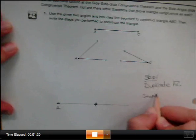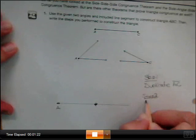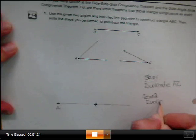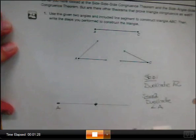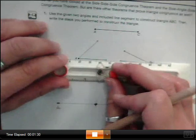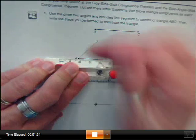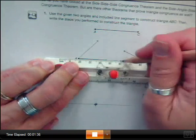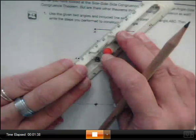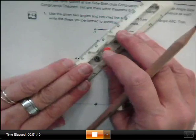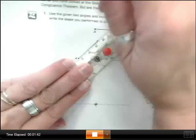Step two is to duplicate angle A. Now you may need to extend those lines a little bit so that you have a little bit more room. They are pretty small, and if you get your first arc very small it's going to make the duplicating part difficult.